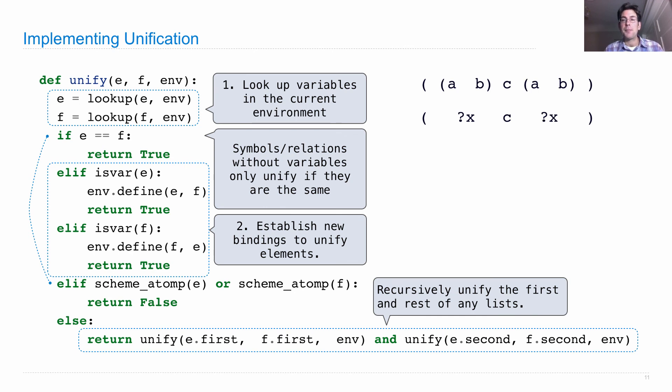As an example, here's the same example that we had before. The whole thing is a list, and so we end up going to the recursive case first, which focuses us on these two. Now these two is an instance where is var f is true, f is a variable, and so we define f as whatever e is. So here we have a statement, env dot define f as e, which introduces into our environment a binding, x goes to a, b.